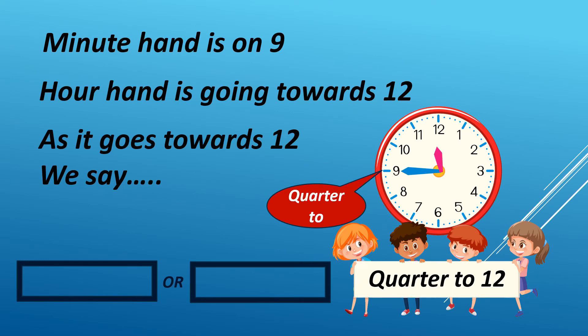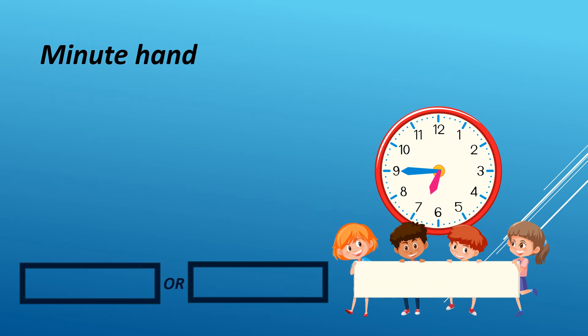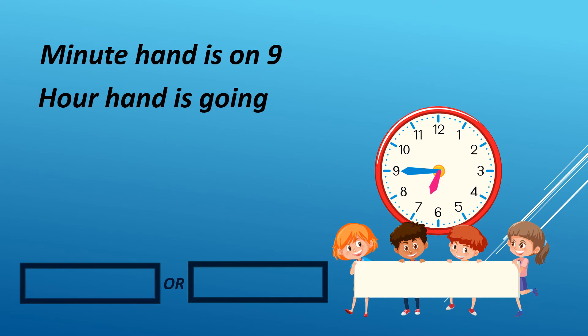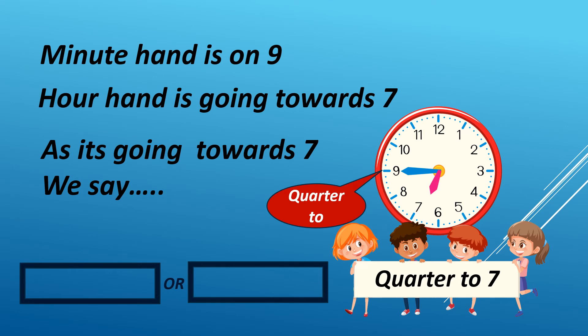It can either be AM or PM. For example, it is 11:45 PM in 12-hour format. We read it as 2345 hours in 24-hour format. When the minute hand is on 9 and the hour hand is going towards 7, we say quarter to 7.